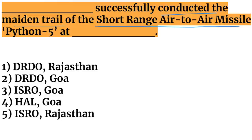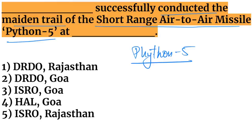Next question: who successfully conducted the maiden trial of the short-range air-to-air missile Python-5? DRDO conducted the successful trial of the Python-5 short-range air-to-air missile, and this was conducted at Goa.